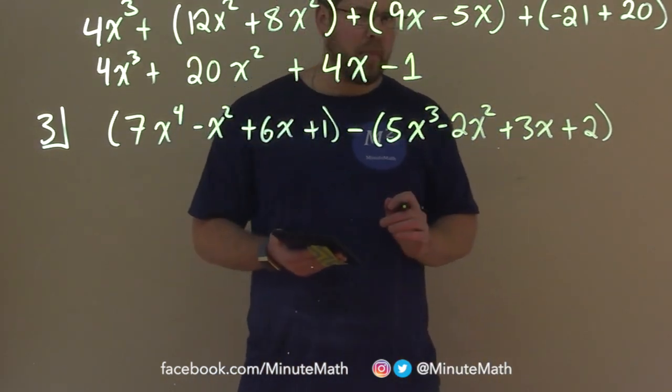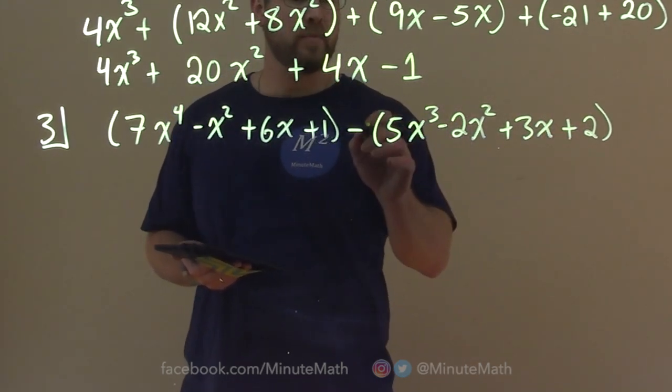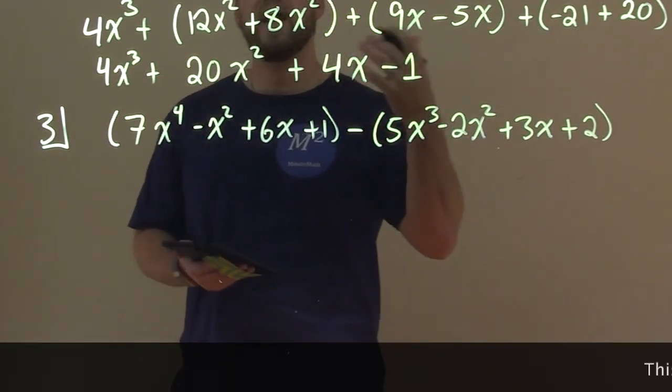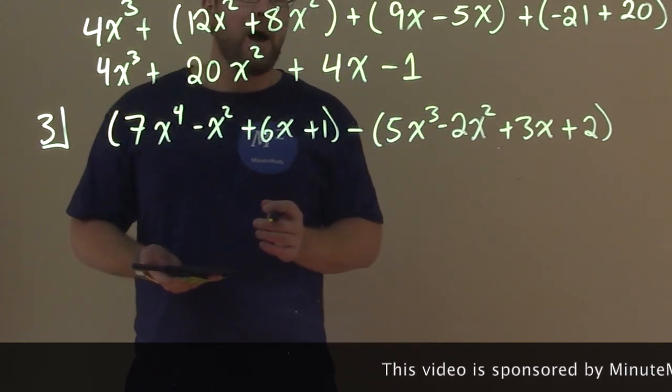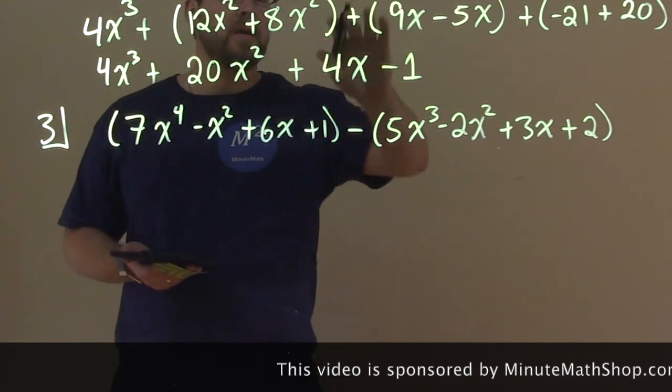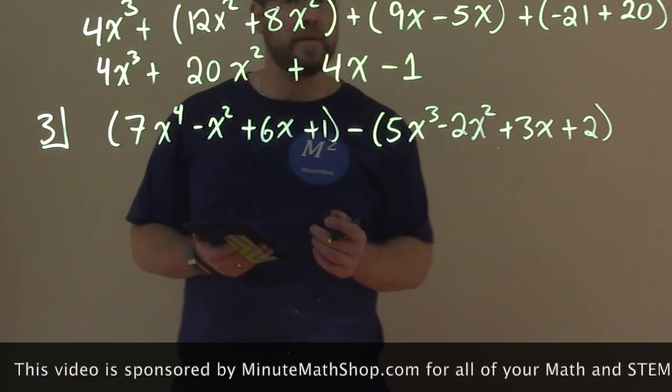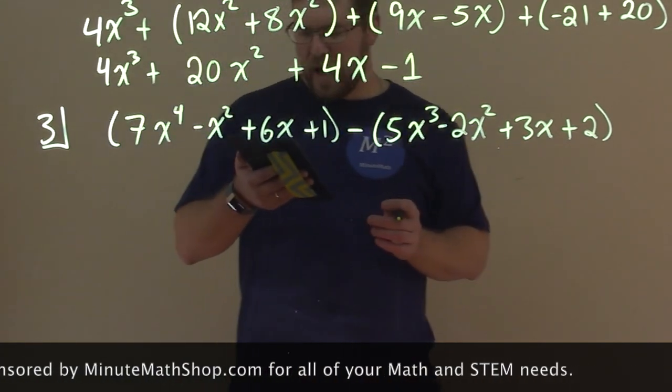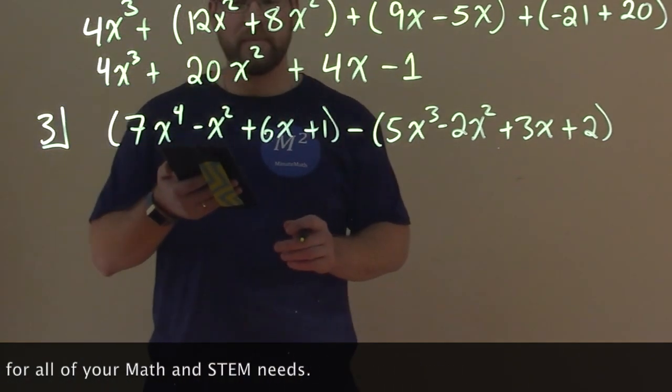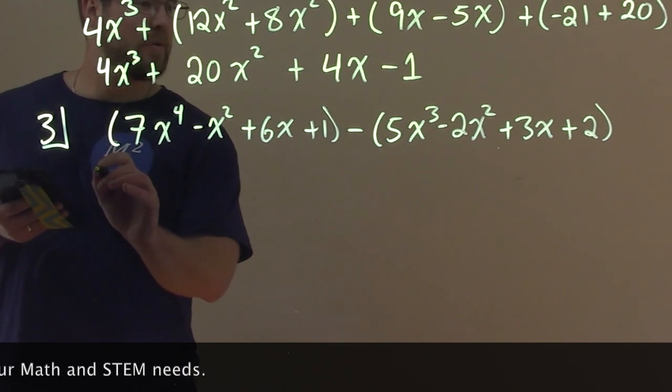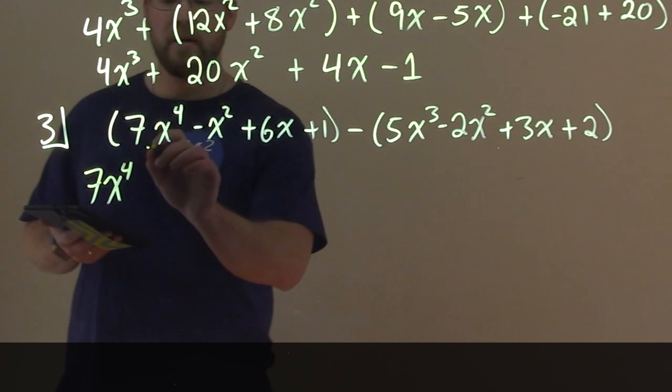So there's a few ways to go about this. Some people like to distribute this minus sign to all terms first. Then it's based on an addition problem, you just add your polynomials. I'm going to kind of follow the same pattern we did up here, but I'm going to have that subtraction in there and we'll deal with each term individually. Let's go with our highest degree. Highest degree we have here is that 7x to the fourth power. So we have 7x to the fourth, the highest one, and nothing else has a fourth power here, so it's by itself.